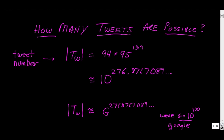Everybody uses Twitter, and in Twitter you can create tweets consisting of up to 140 characters in a character string that you type in from your keyboard. I got curious how many tweets are actually possible. I'll just tell you the answer right now: the number of possible tweets using just standard characters on the keyboard is equal to 94 times 95 to the 139th power.